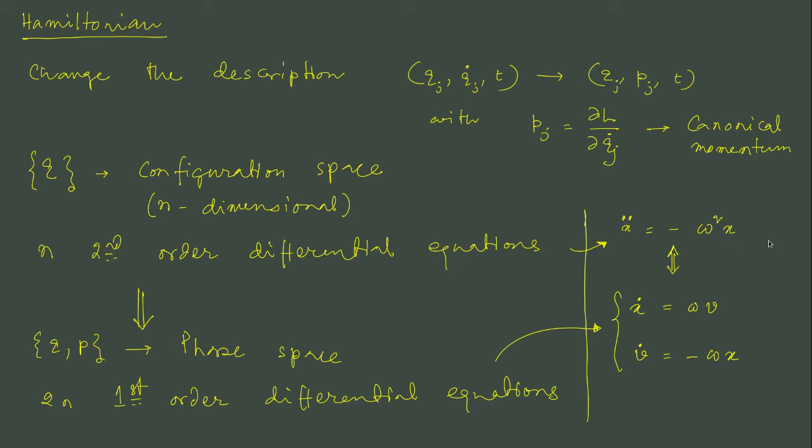Now if we have a second order differential equation to completely solve it we need two initial conditions. We need the values of x at a particular time and x dot at a particular time. That scenario has not changed. Even in this case when you have two first order differential equations you still need initial conditions. You still need to know for an exact solution the value of x at a particular time and value of v at a particular time. So although the description has changed, our inherent information that we need as initial condition, that part has not changed.